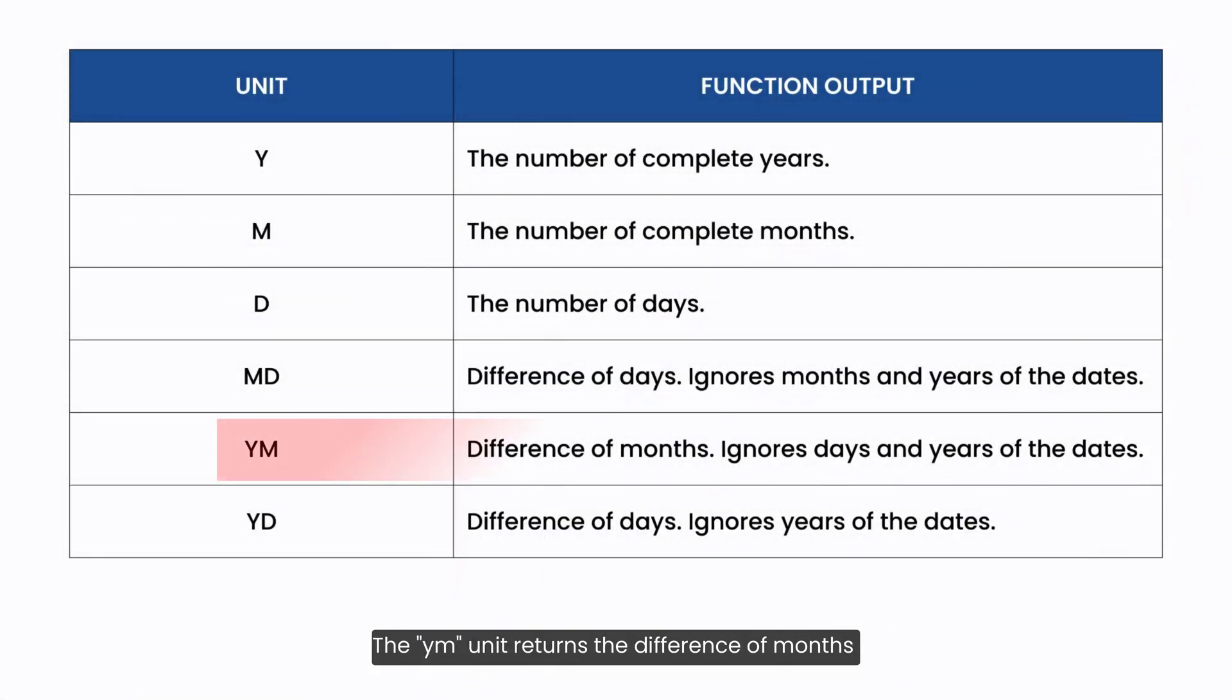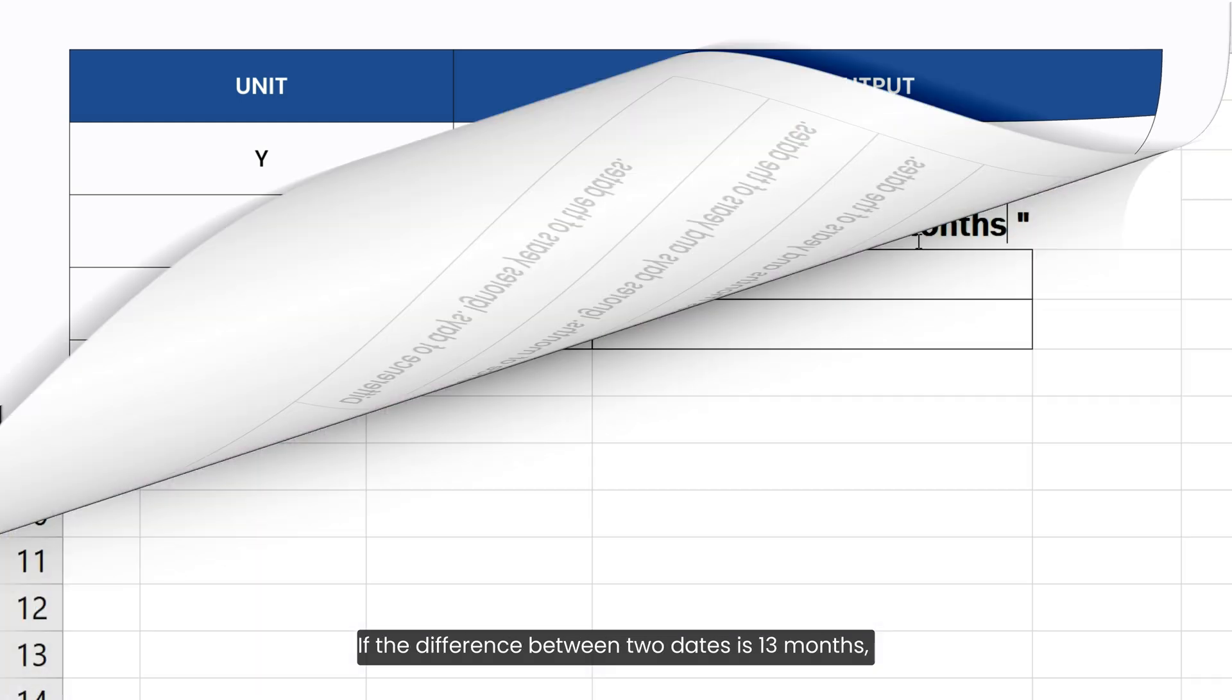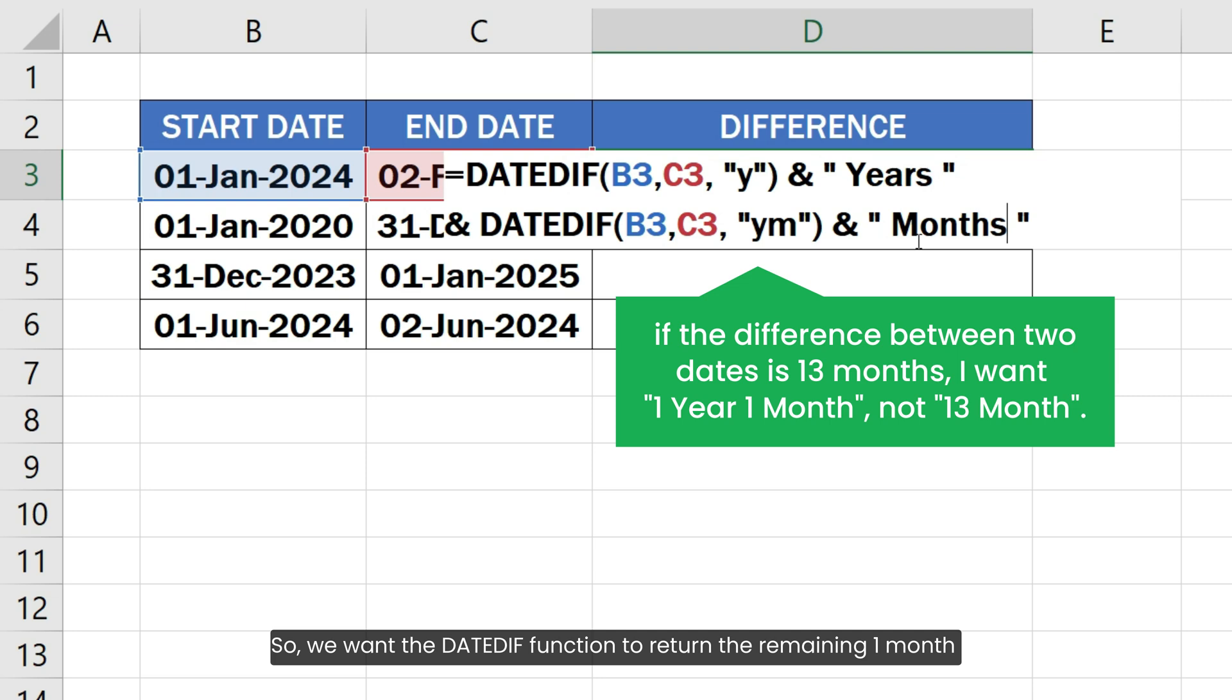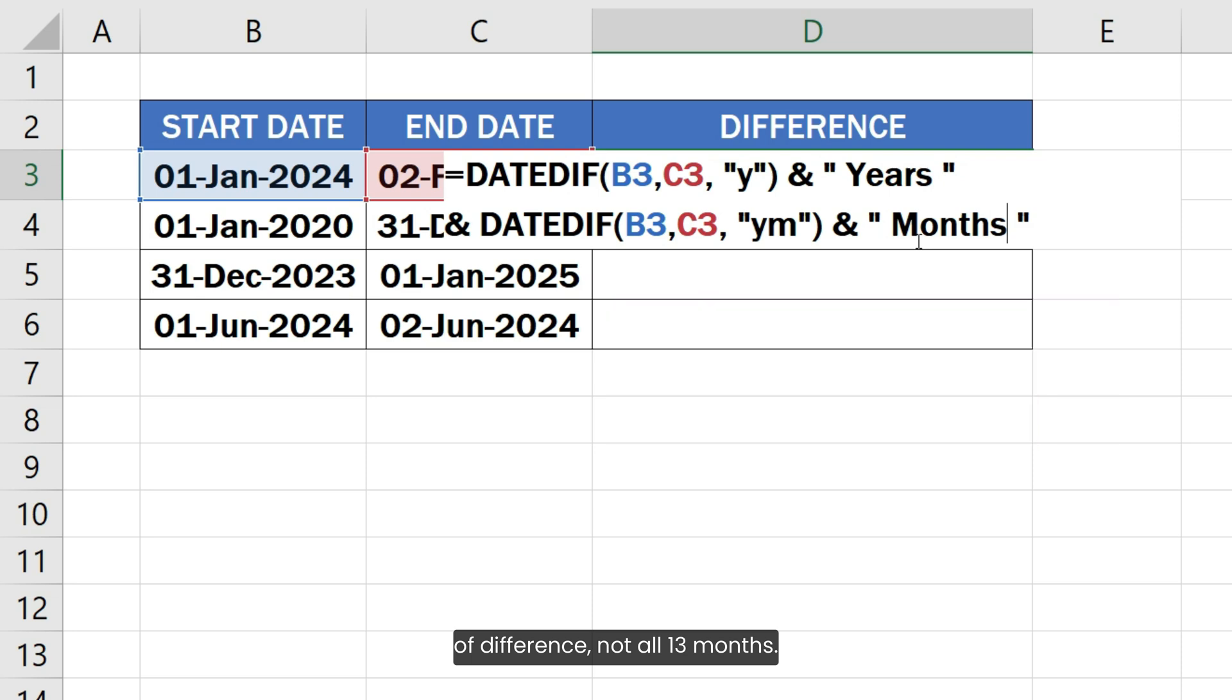The ym unit returns the difference of months between two dates by ignoring years. If the difference between two dates is 13 months, the first part of the formula will already return one year. So we want the DATEDIF function to return the remaining one month of difference, not all 13 months. That is the reason I used the ym unit instead of m.